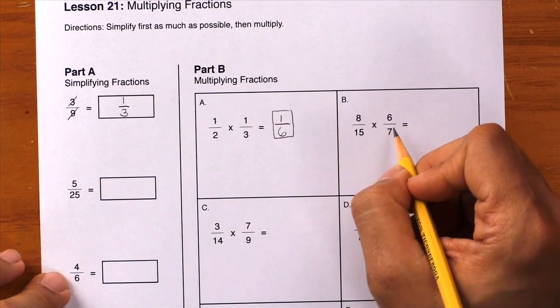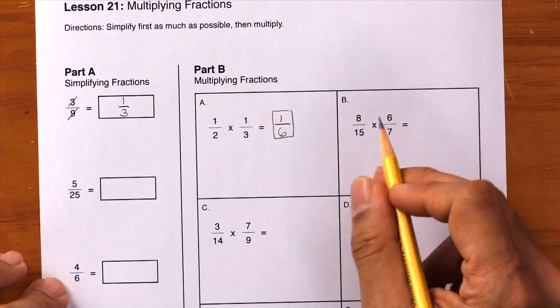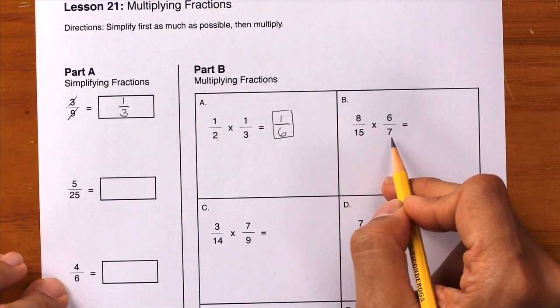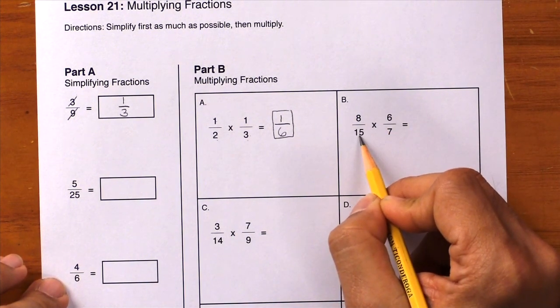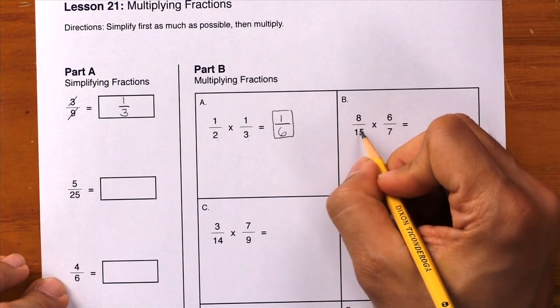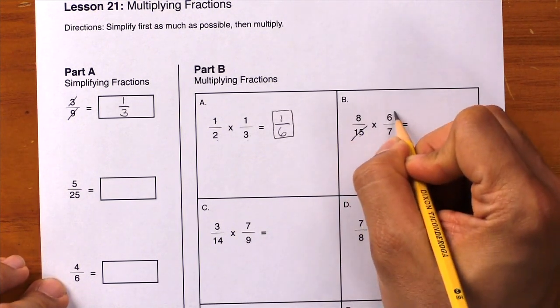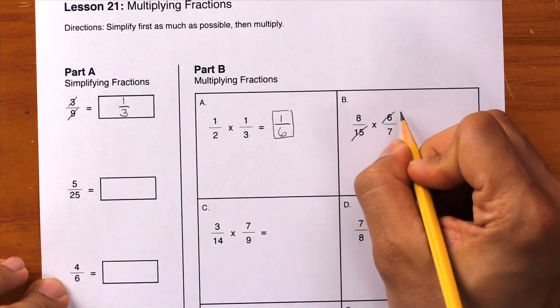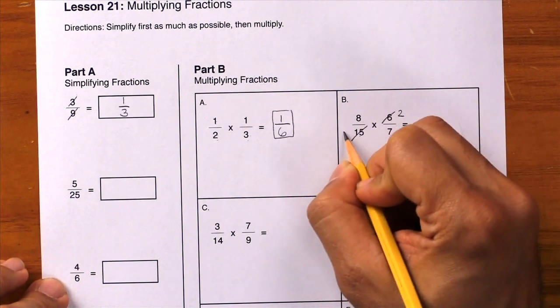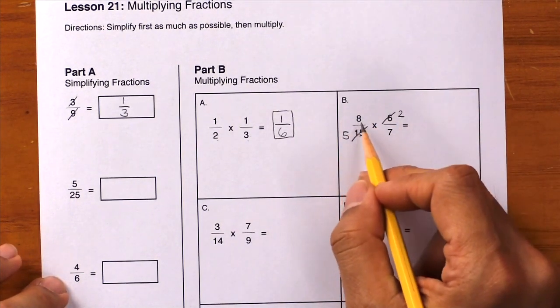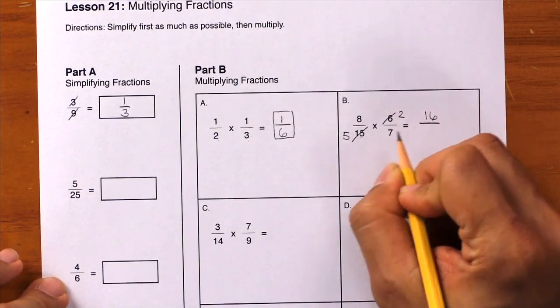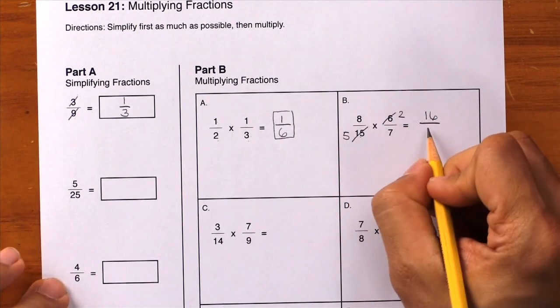Let's look at our next example. We can't simplify 8/15 or 6/7. Can we simplify the 8 and 7? No. How about 6 and 15? Yes, because we can divide both of them by 3. This gives us 2 and 5. Now let's multiply: 8 times 2 is 16, 5 times 7 is 35.